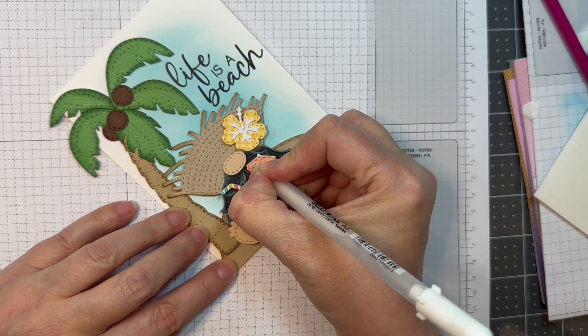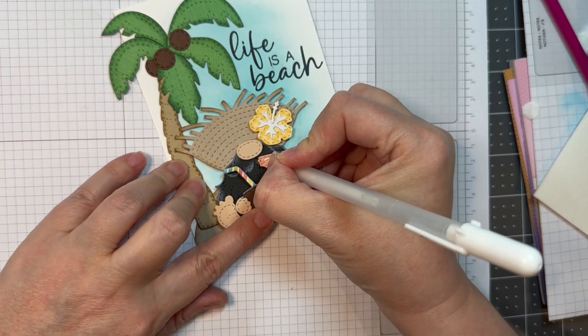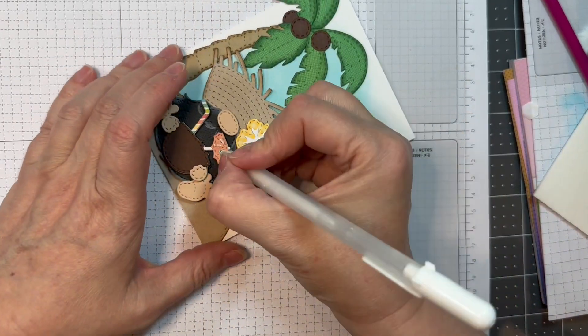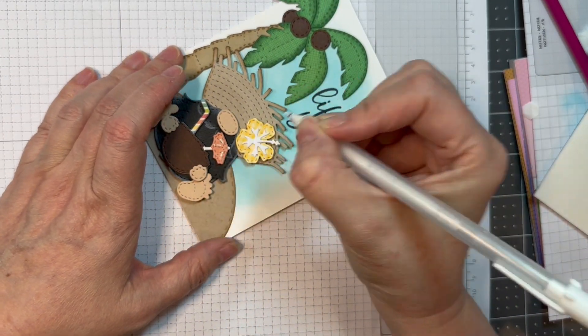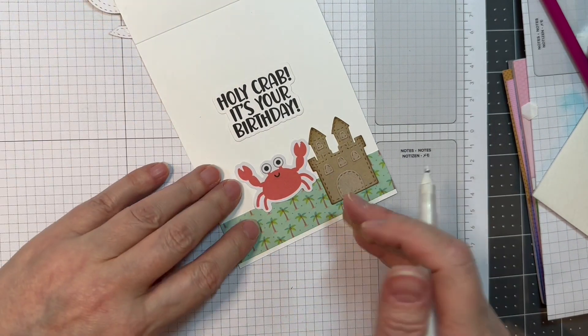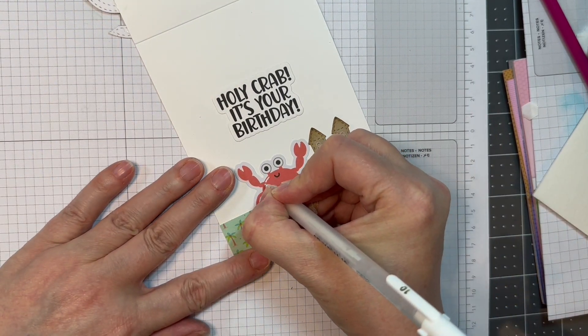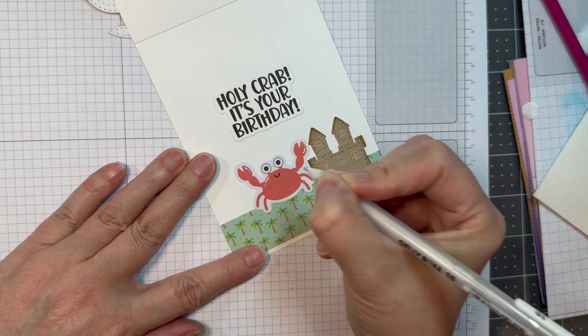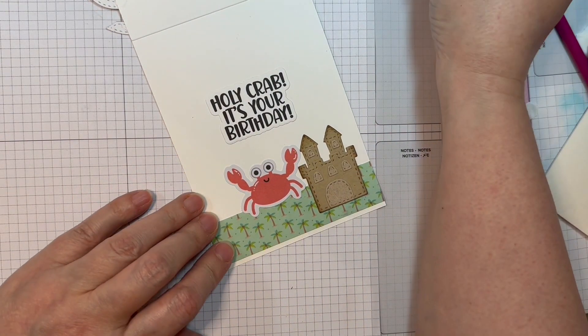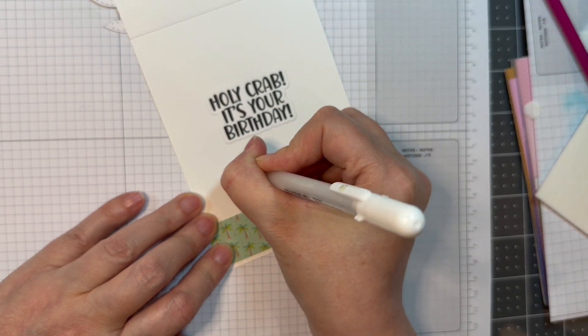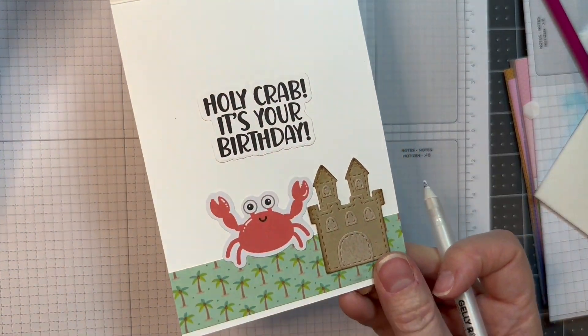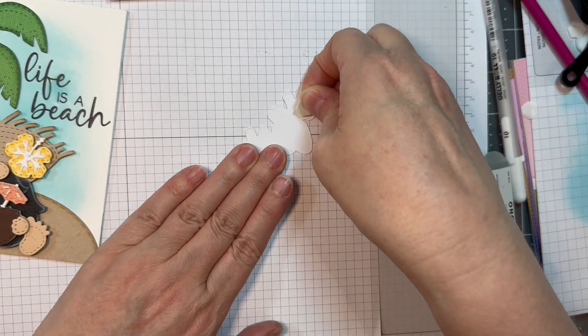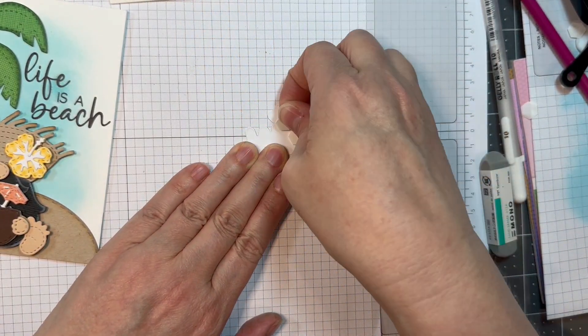I pulled out my Sakura white jelly roll pen number 10. I'm going to add a few little highlights to this umbrella and a few little highlights on the inside of my card to that little crab. I think this is a super fun kind of tropical birthday card. I love these new tiki add-ons from Jada Blossom. I just think that they are adorable and they go so well with the beach add-ons from last month.